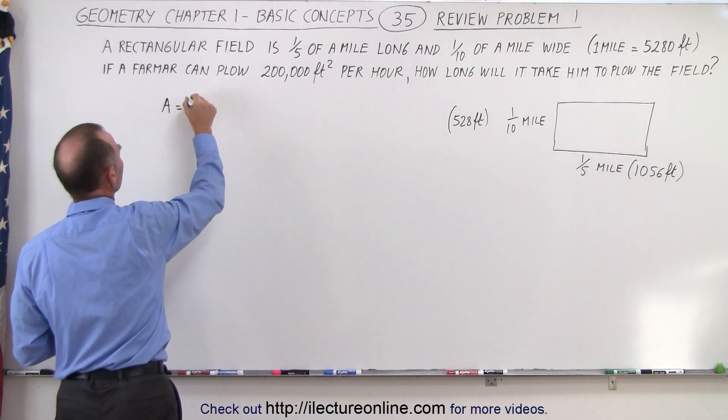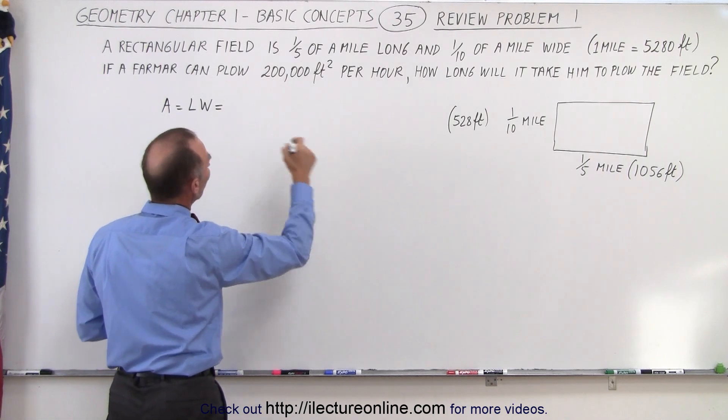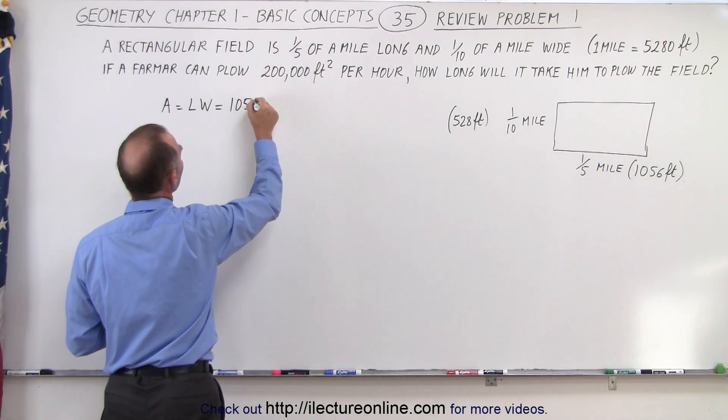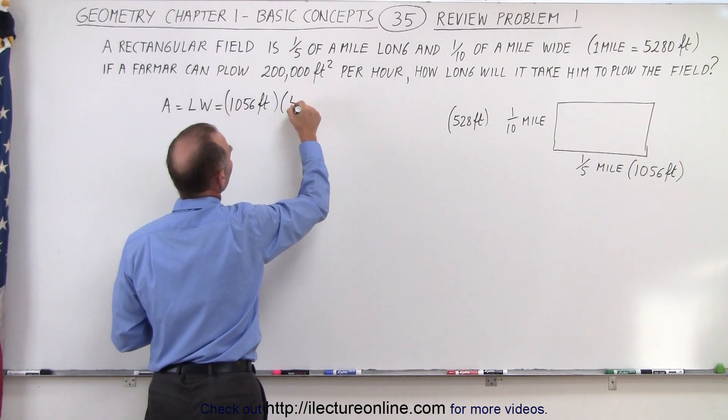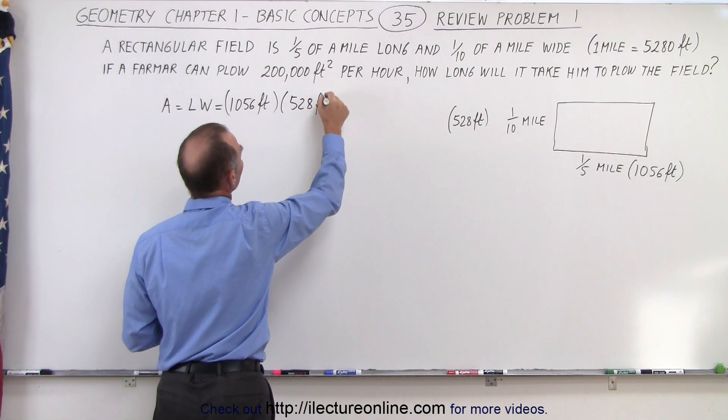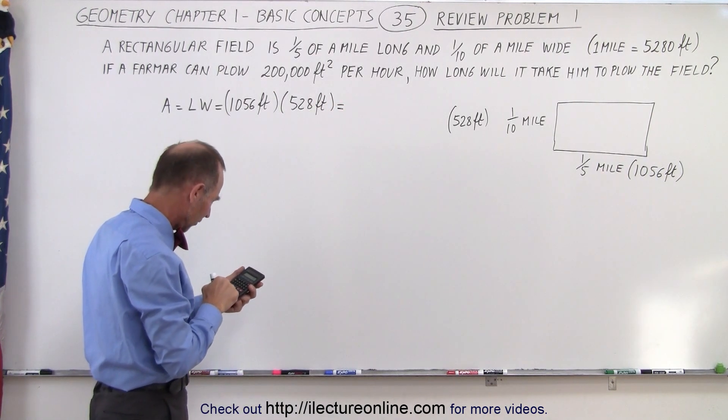So the area is equal to the length times the width. The length is equal to 1056 feet. And the width is equal to 528 feet. So I'm going to multiply that out times 1056.